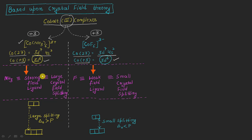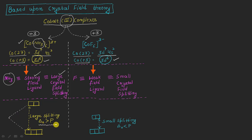Based on crystal field theory, ammonia is a strong field ligand and will produce a large crystal field splitting where delta is always greater than the pairing energy. On the other hand, fluoride is a weak field ligand and will produce a small crystal field splitting. For the fluoride complex, the delta for octahedral is less than the pairing energy. This difference in ligand field strength will determine how the six d-electrons are filled in each complex.